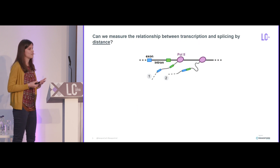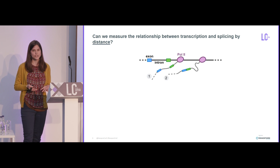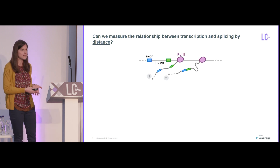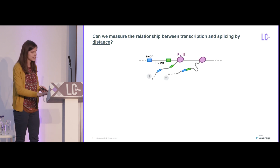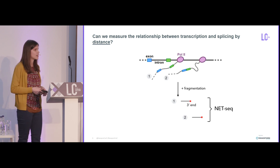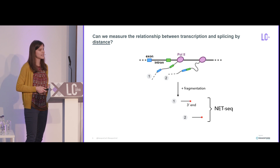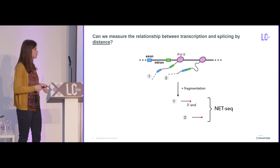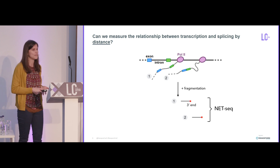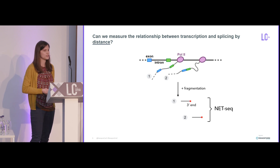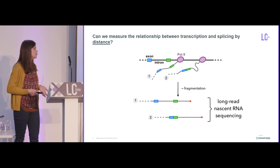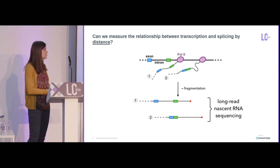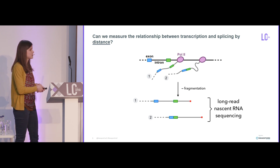Most studies that have looked at the relationship between transcription and splicing have done so using time — measuring the time that it takes to transcribe an intron and then splice it. But we thought it would be better to look at distance. This is based on a technique my advisor developed during his postdoc called Native Elongating Transcript Sequencing, or NET-seq, where we purify nascent RNA that is being transcribed and then sequence from the very three-prime end. If you align this to the genome, it tells you the position of RNA polymerase 2 across the genome. But we're missing some information, so I wanted to make a long-read application of this approach so we can not only look at the three-prime end of the reads, but also see whether splicing has occurred.